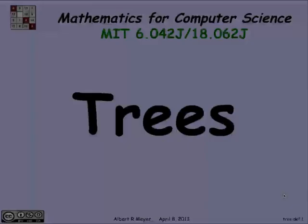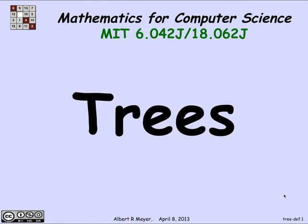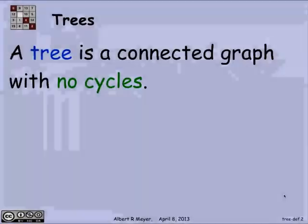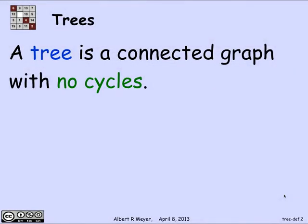Trees are about the most basic data structure that you're ever going to come across. They pervade computer science and other subjects, so let's talk about them. The simplest definition of a tree is that a tree is a connected graph with no cycles. In this setting we're talking about simple graphs and trees with undirected edges.